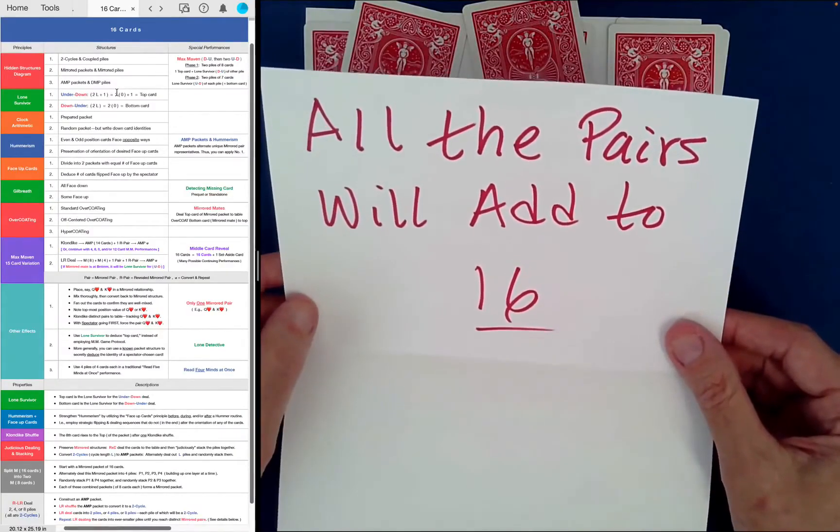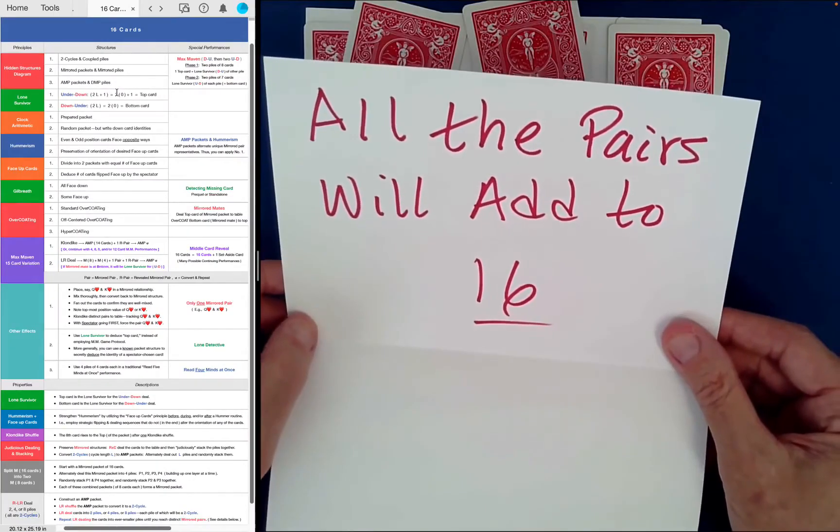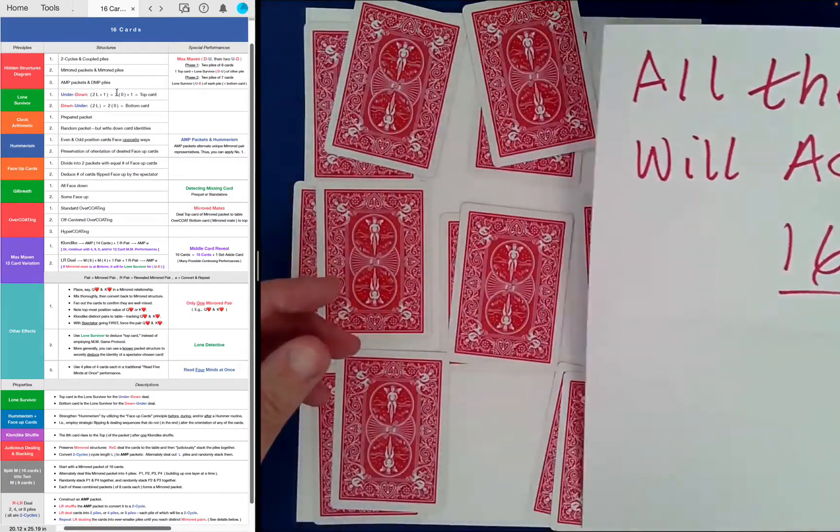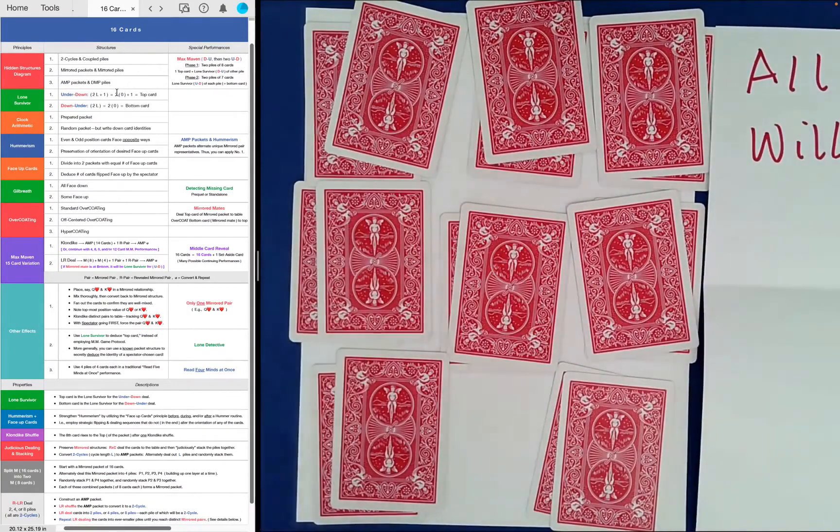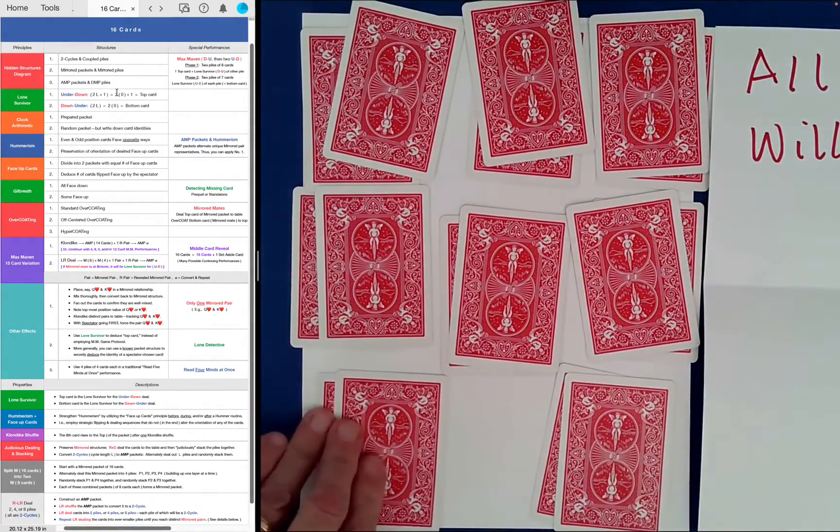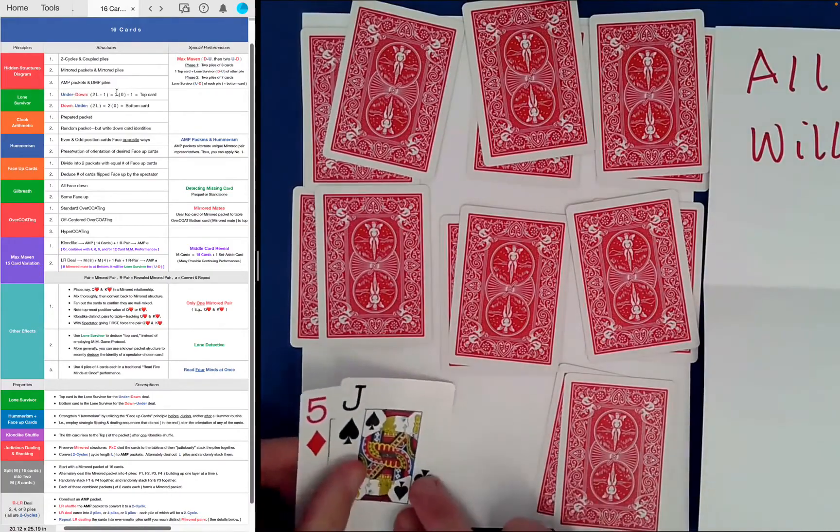Prediction. All the pairs will add to 16. Let's see how we did. I'll leave my little paper there so you can still see it there. All the pairs will add to 16. How did we? Let's see.